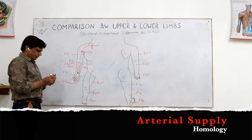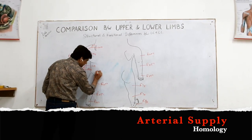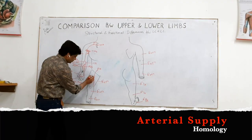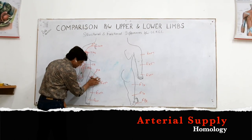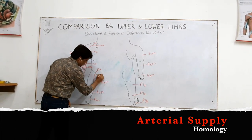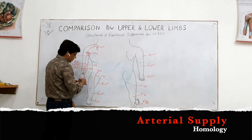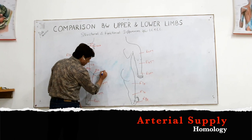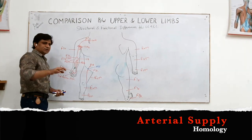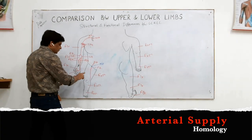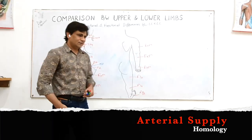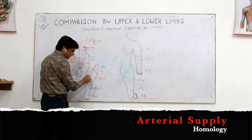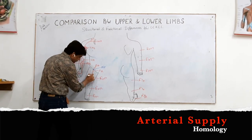The inguinal ligament marks where the external iliac artery becomes the femoral artery, after crossing the mid-inguinal point — the midpoint of the inguinal ligament. It passes in the lateral compartment of the femoral sheath. The femoral artery runs downward through the femoral triangle and then through the adductor canal (Hunter's canal).